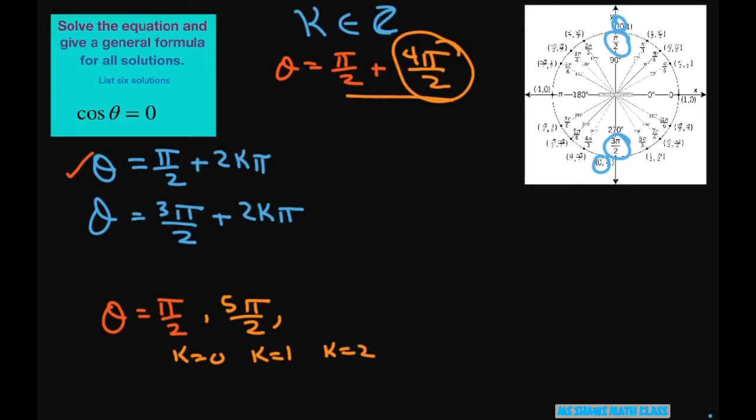Just keep adding 4π. So this would be 9π/2. Add 4 to that, 13π/2. You can keep going on and on and on.